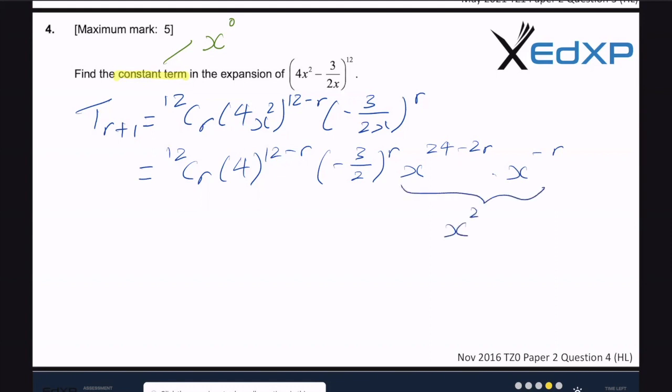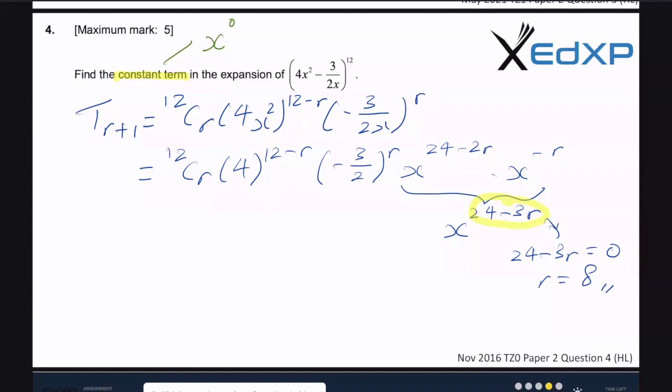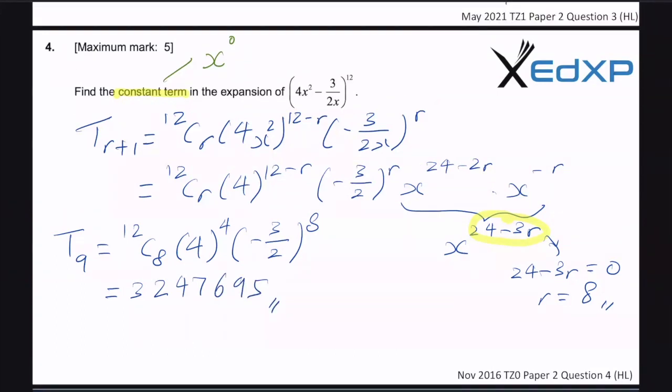Let's simplify this guy over here. So this is actually x to the power of 24 minus 3r. If we want the constant term, then this guy in yellow must equal to 0. So 24 minus 3r equals to 0, r equals to 8. So now that we know that r is equal to 8, we're actually interested in the ninth term, tr plus 1. So the ninth term will be 12 choose 8, 4 to the power of 4, and minus 3 over 2 to the power of r, which is 8. And since this is a paper 2, we can proceed to use the calculator. And the final answer is quite large, 3 2 4 7 6 9 5. So these are the three examples from past papers. You can continue to practice on our adxp app. We have very similar questions.